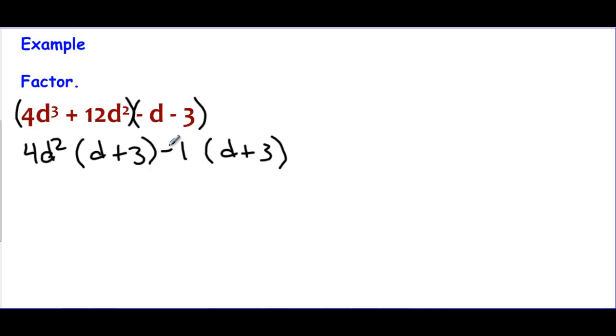So now that I've GCF'd both of the groups, I see my matching D plus three. I'm going to regroup and say one of the terms is 4D² minus one. That came from my GCF and my GCF. And then the other one is the matching D plus three. And that is the factored form using factoring by grouping.